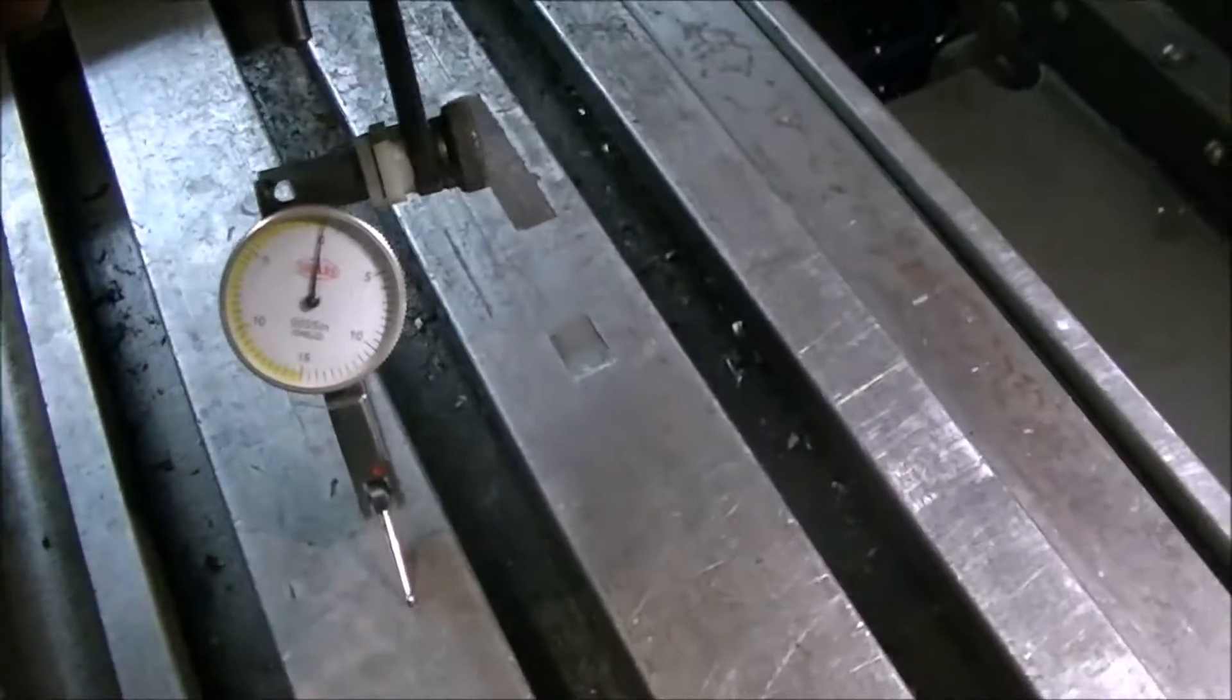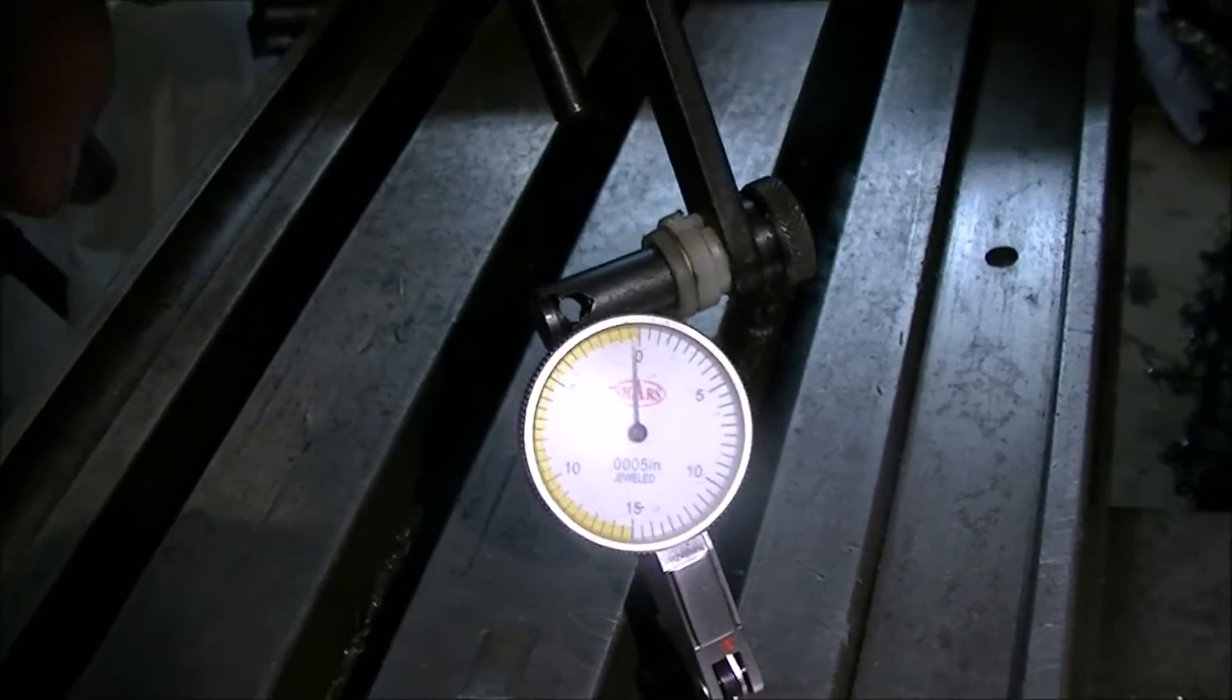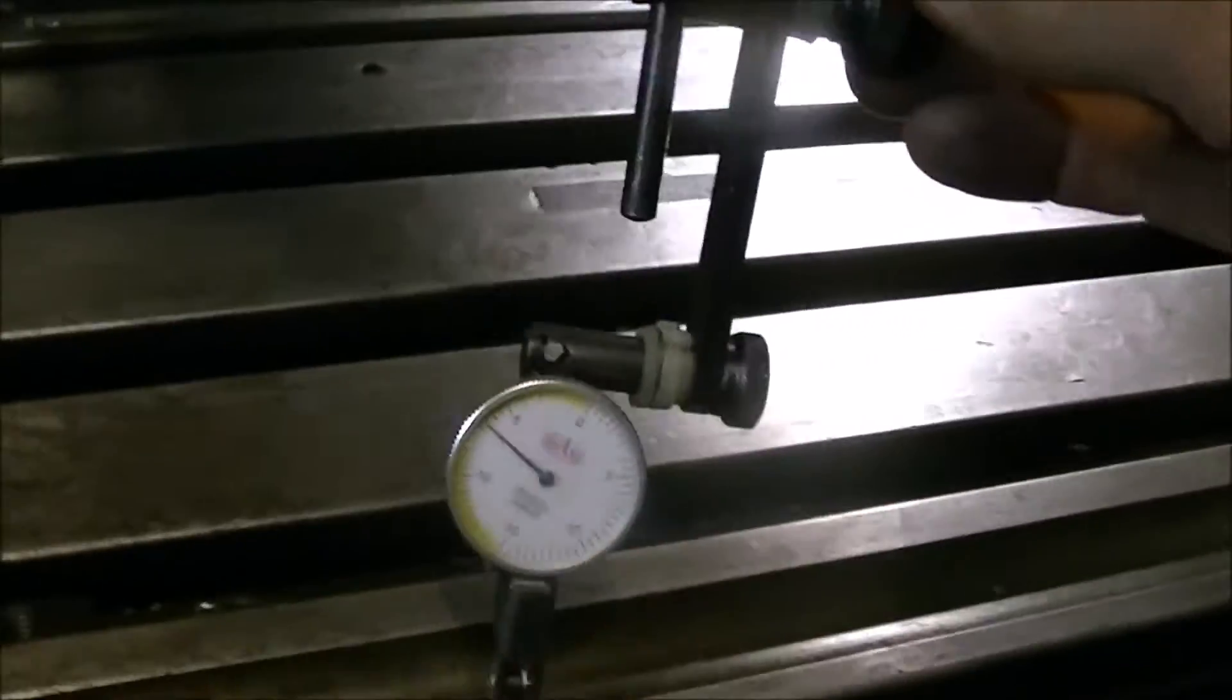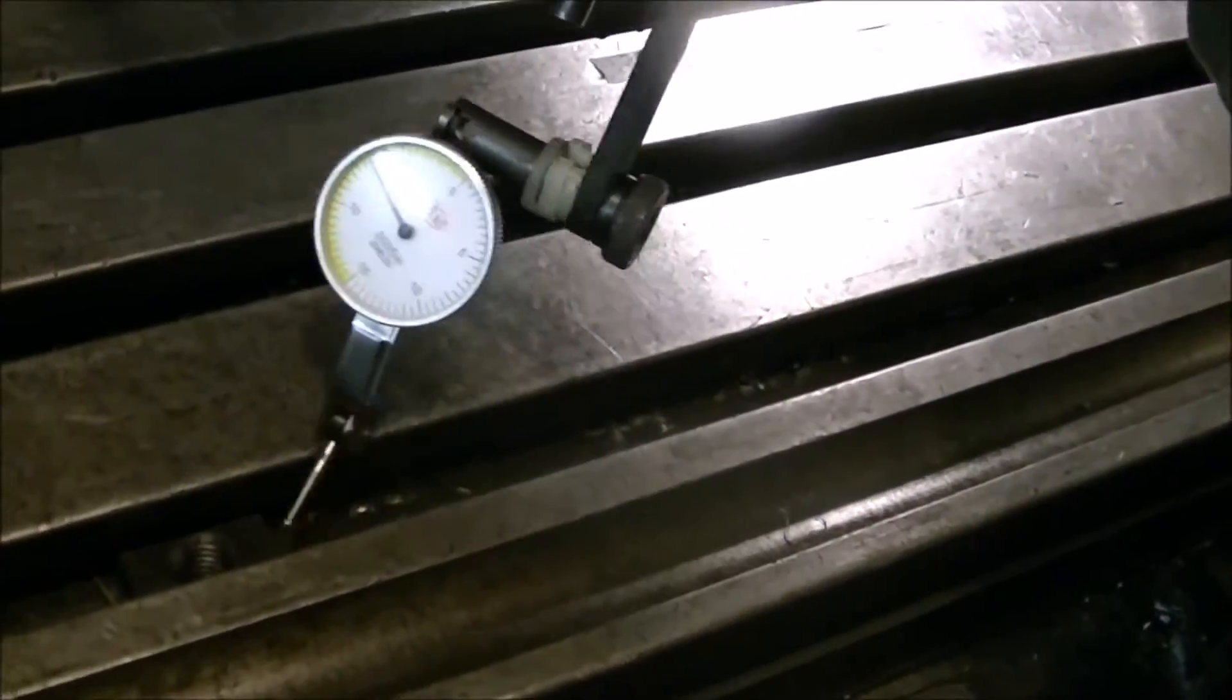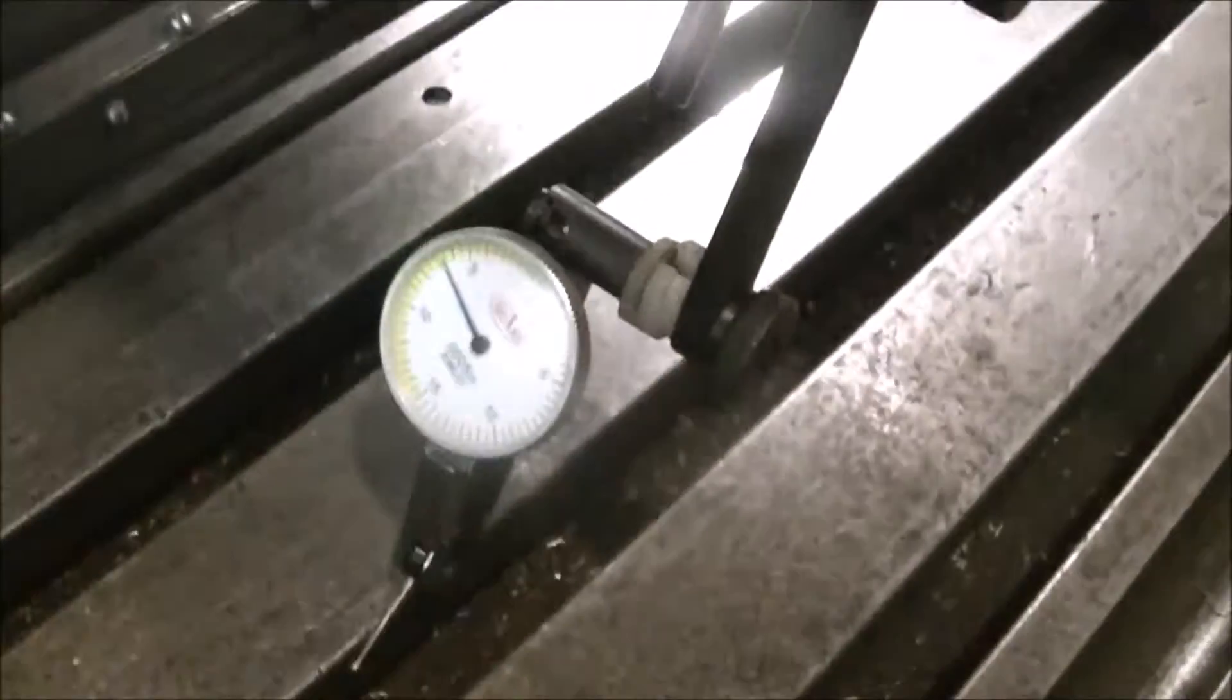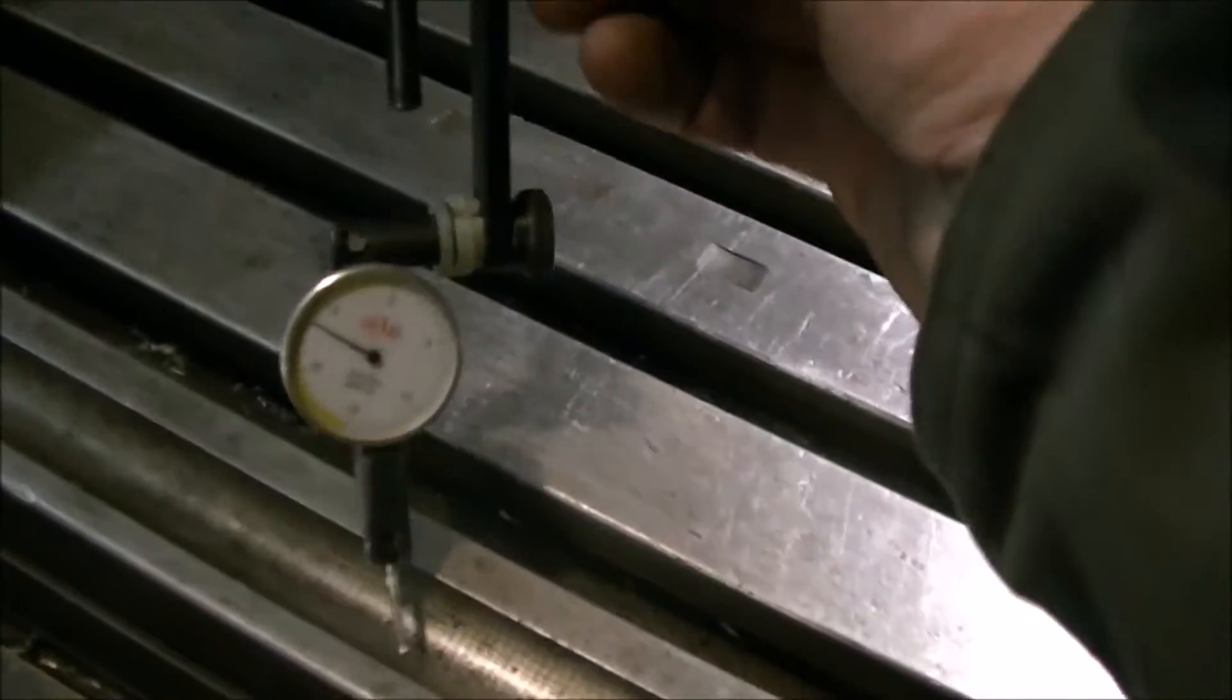Folks, welcome to another short video on a solution I came up with to tramming the mill head. After I mounted the vertical head on the horizontal mill, I was trying to tram it using the table, but with the slots and 70 years worth of dings and nicks in the table, that wasn't working out very well.